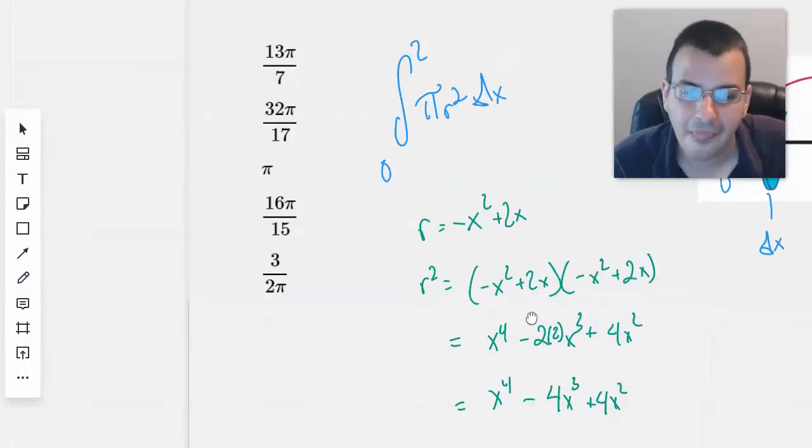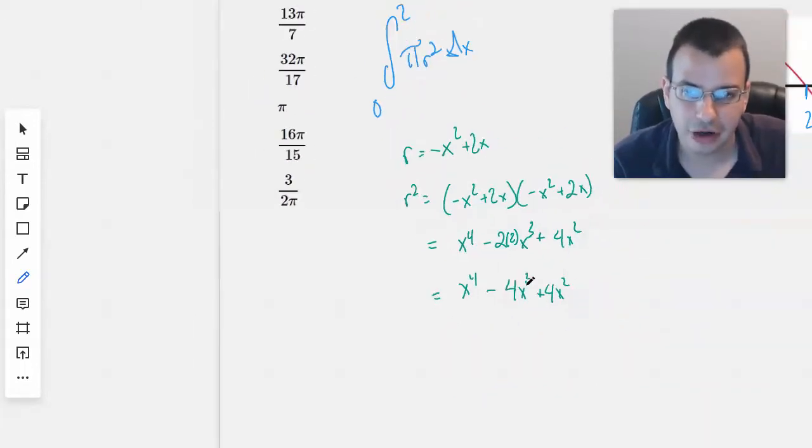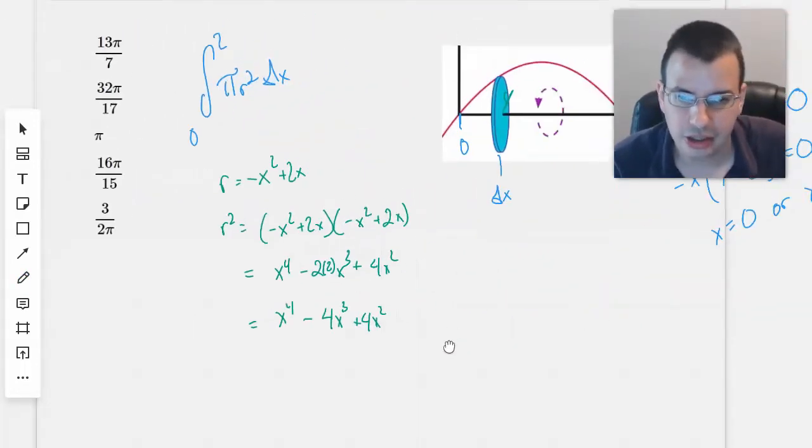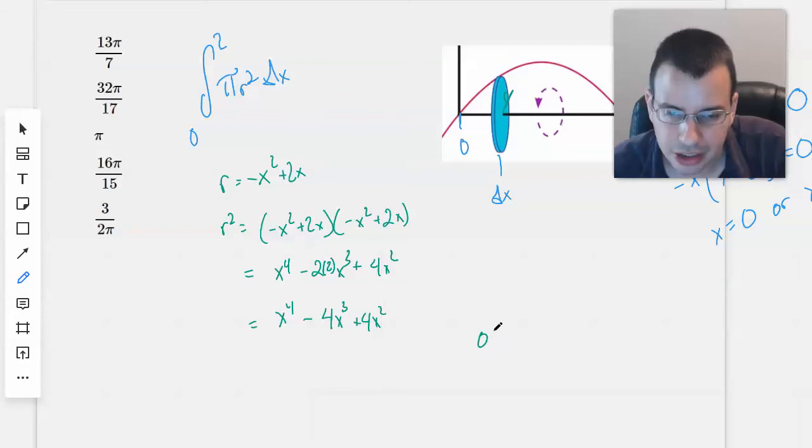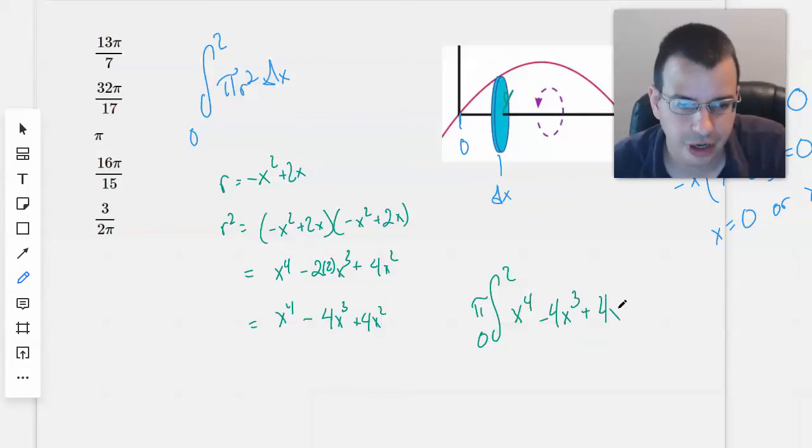When we plug that in for r squared, we're going to get something like 0 to 2. Move out the pi. x to the fourth minus 4x cubed plus 4x squared. Change the delta x to its dx.